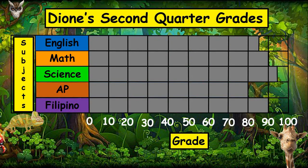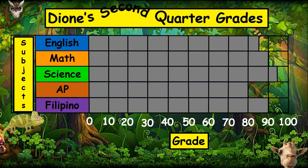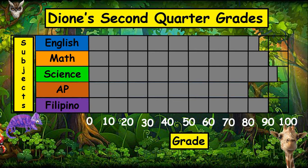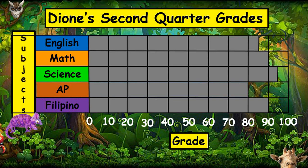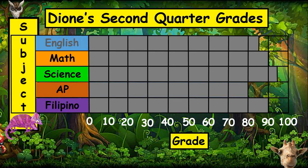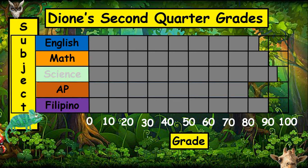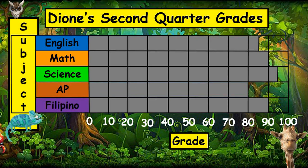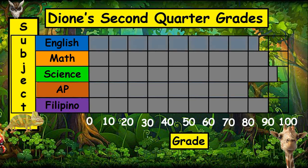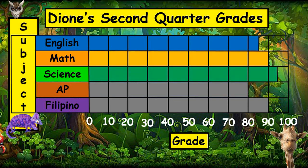Carefully observe the graph. The title of the graph is Dion's Second Quarter Grades. The horizontal axis represents the subject areas: English, Mathematics, Science, AP, and Filipino. The vertical axis represents the grade of each subject. English is 85, Math is 90, Science is 95, AP is 80, and Filipino is also 90.